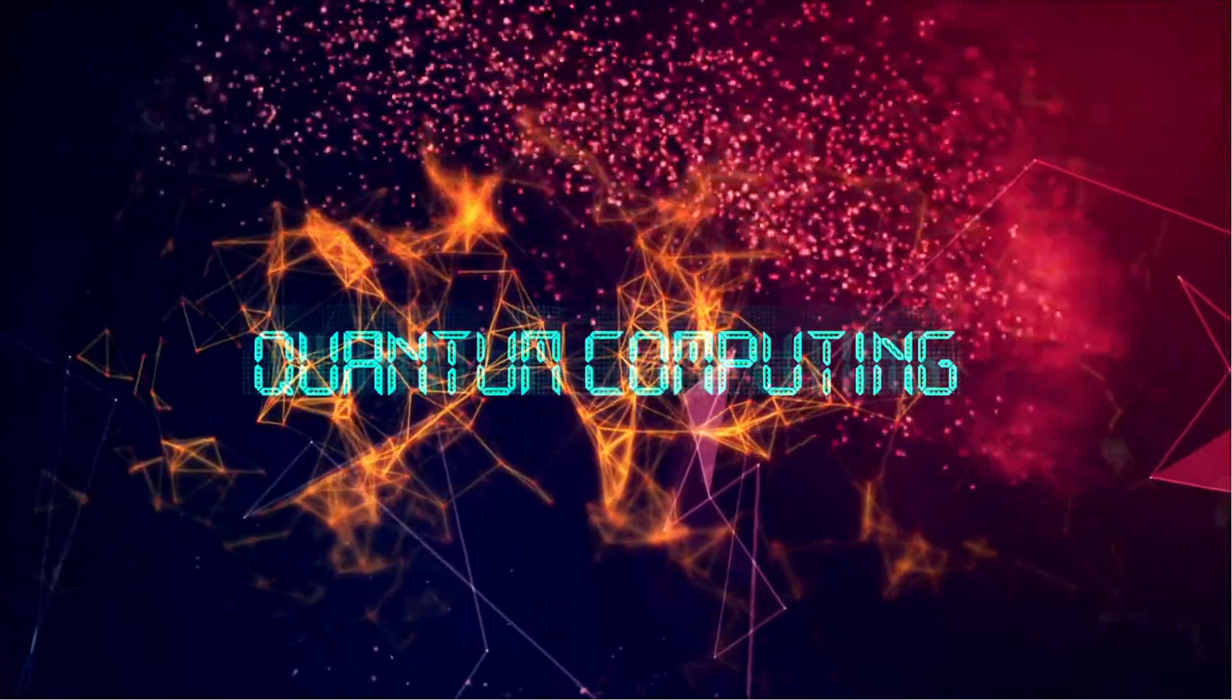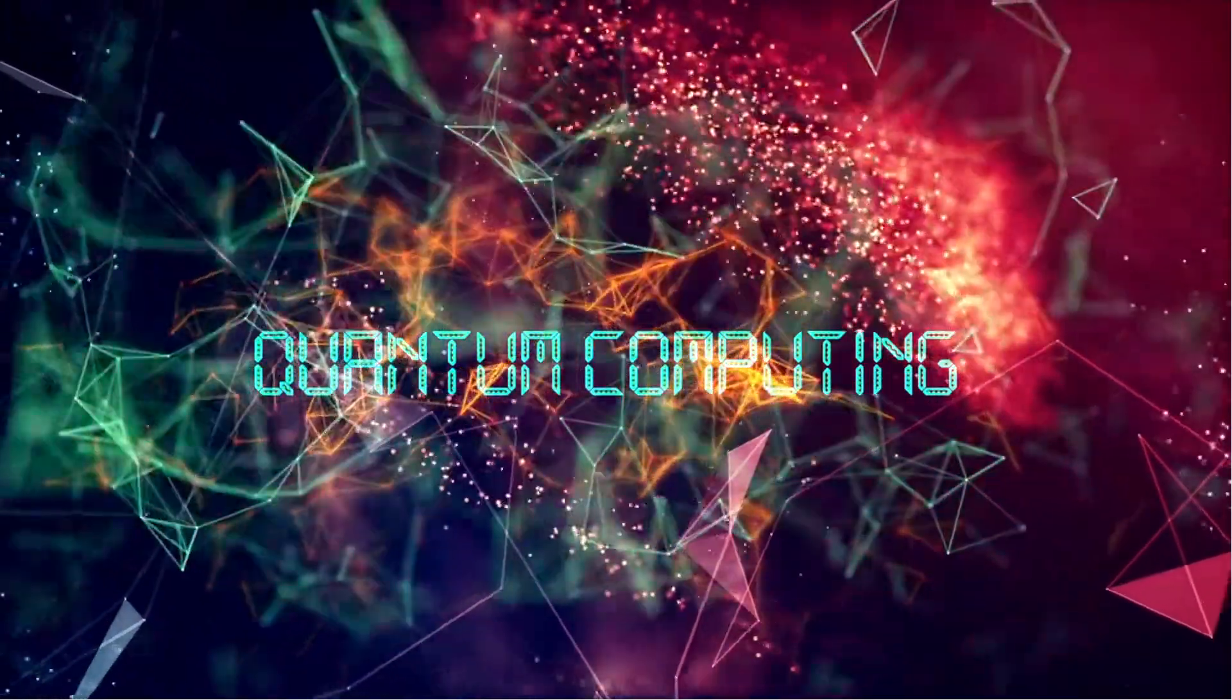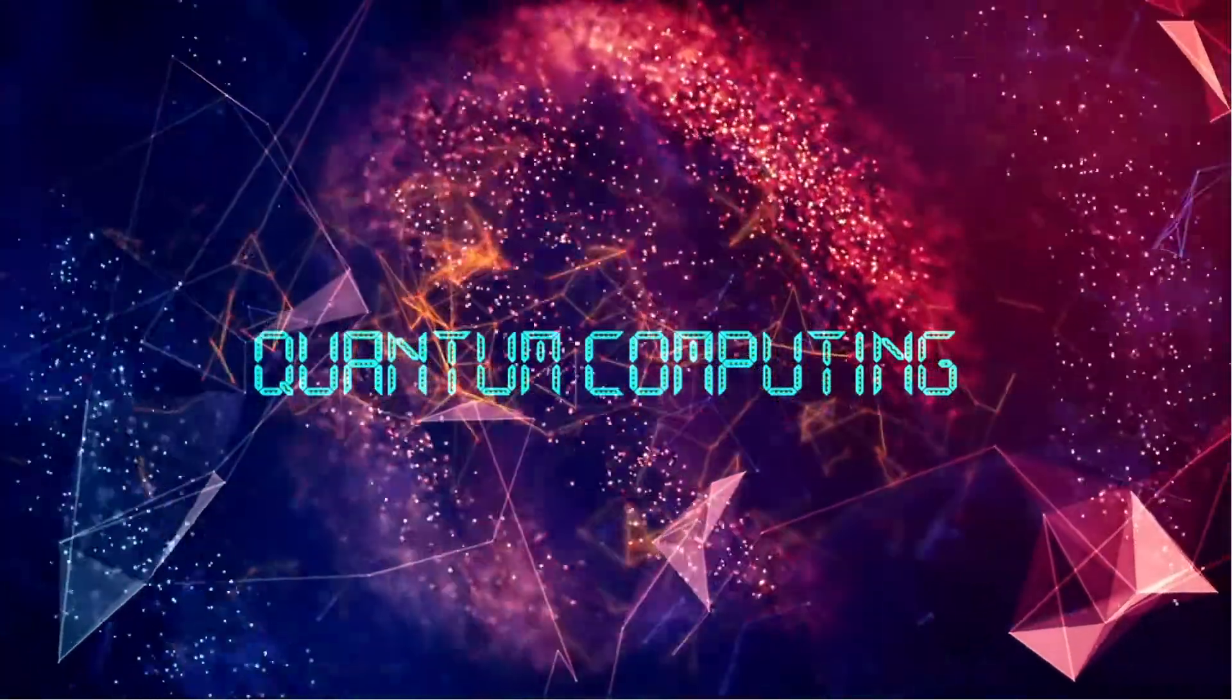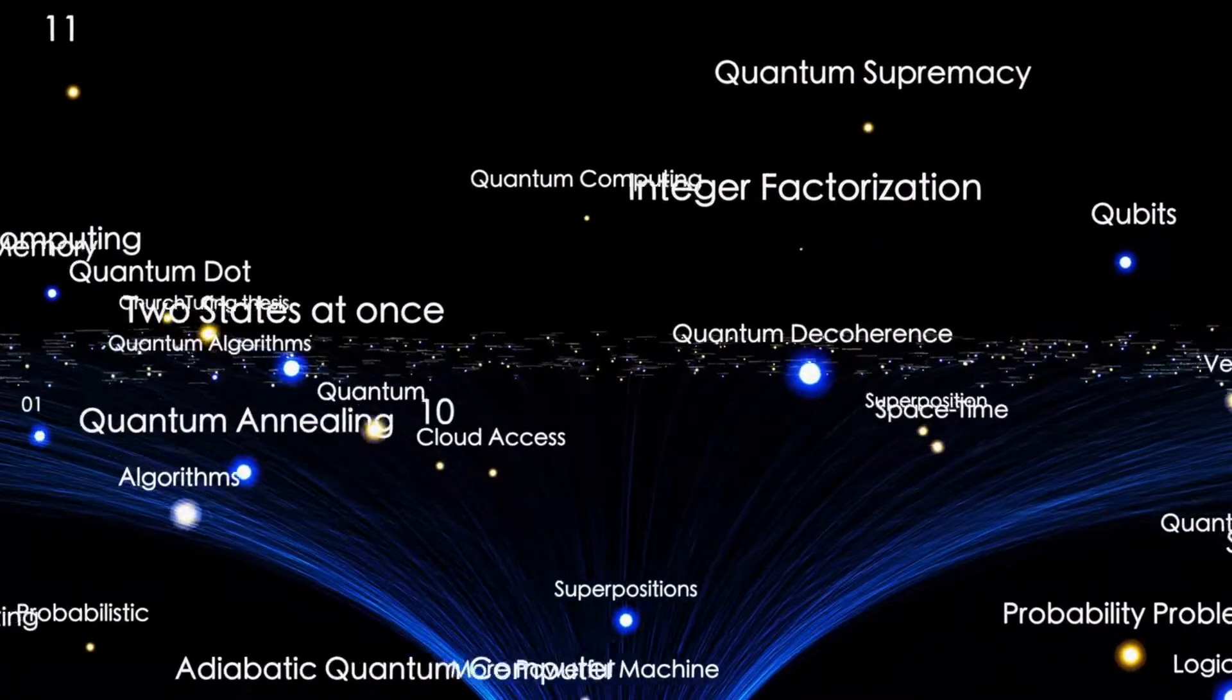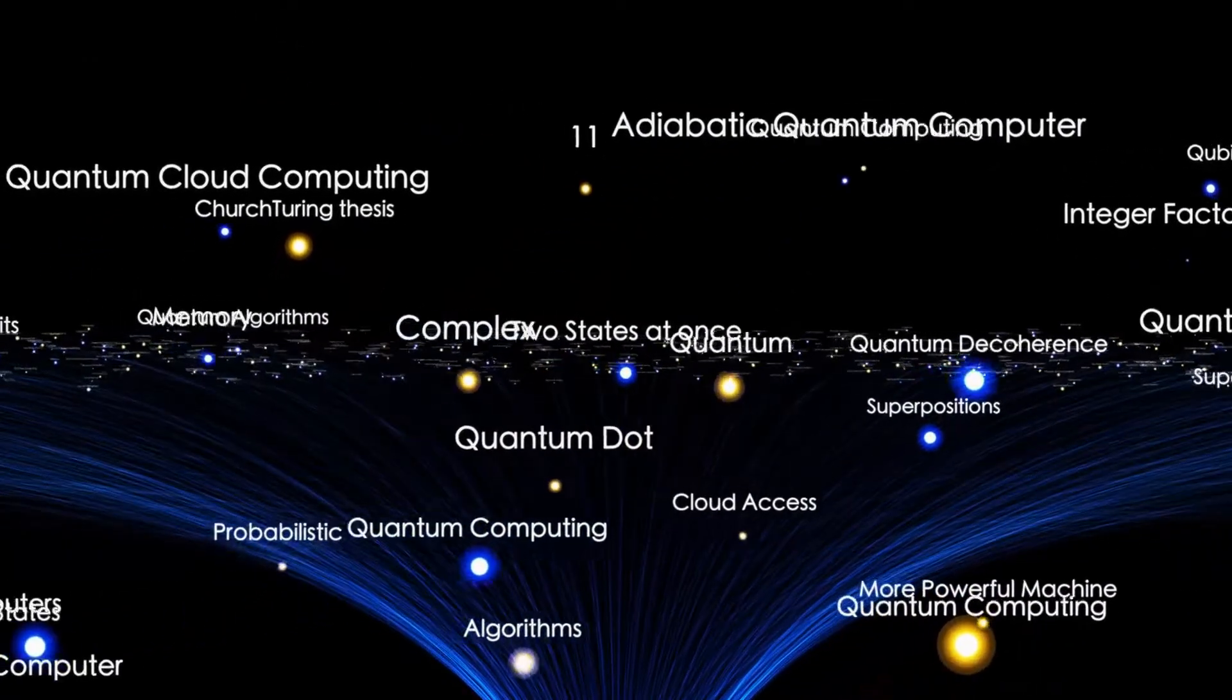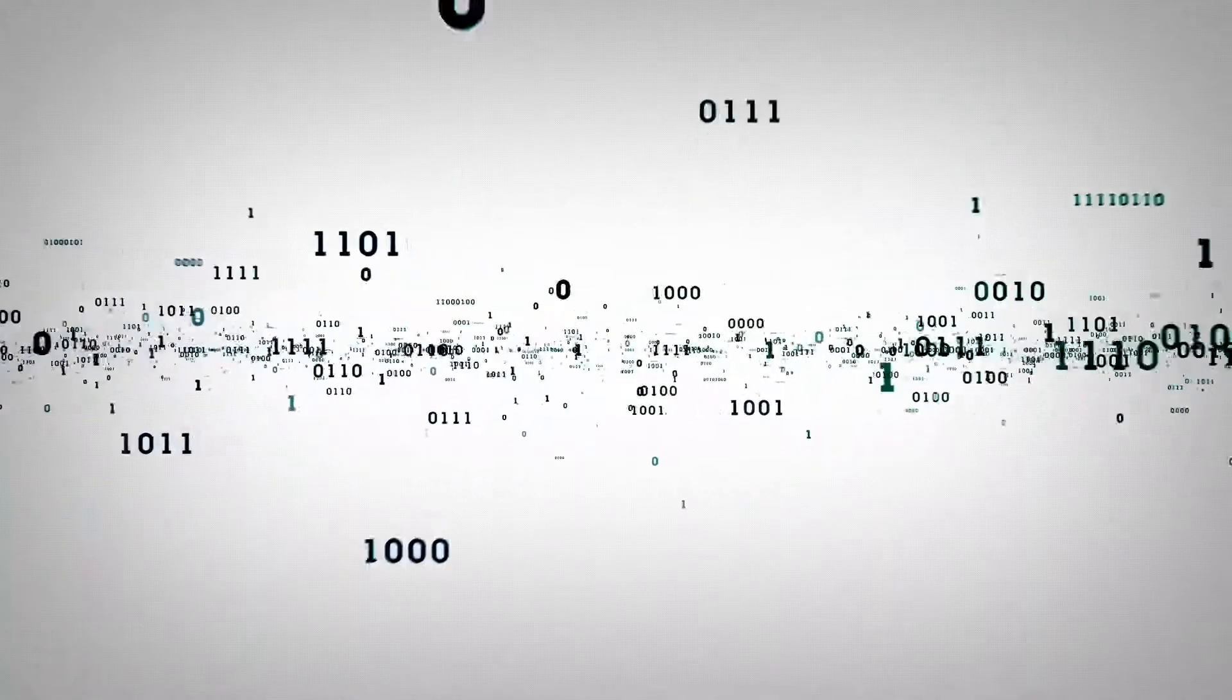The simplest definition is this. Quantum computers are machines that use the properties of quantum physics to store data and perform calculations. This can be extremely advantageous for certain tasks, where they could vastly outperform even our best supercomputers.